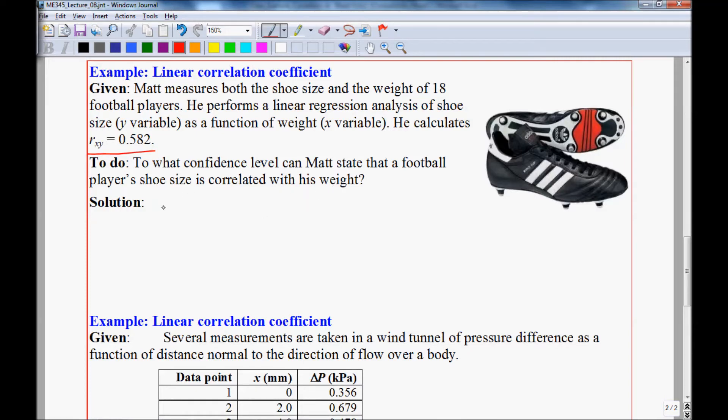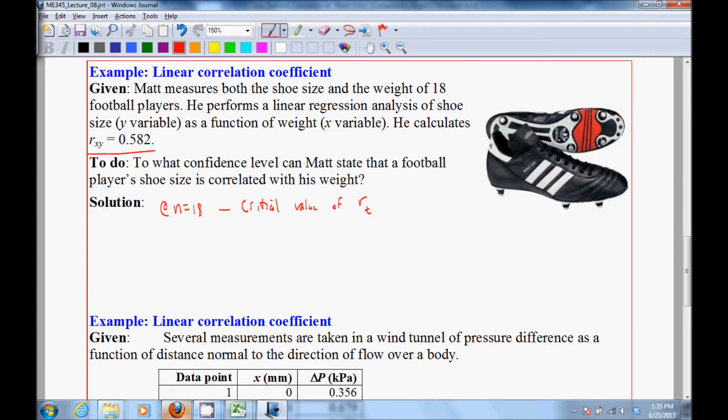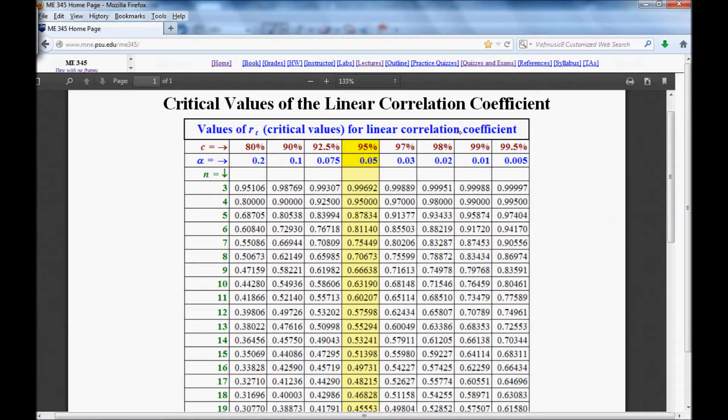Well, we know that there's 18 data points. And so we look up the critical value of the linear correlation coefficient, which is rt. And I'll show you that on the table. If we go to the table of critical values of linear correlation coefficient, at n equal 18, we will go down to 18.